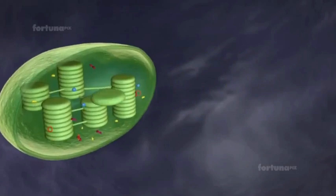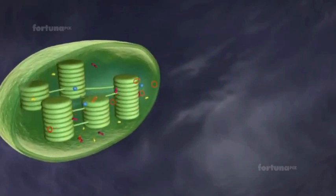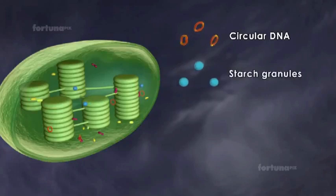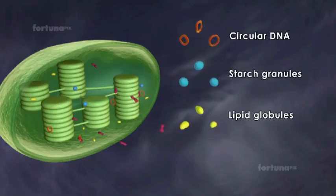Within the stroma, circular DNA, tiny lumps of starch granules, lipid globules, and ribosomes are present.